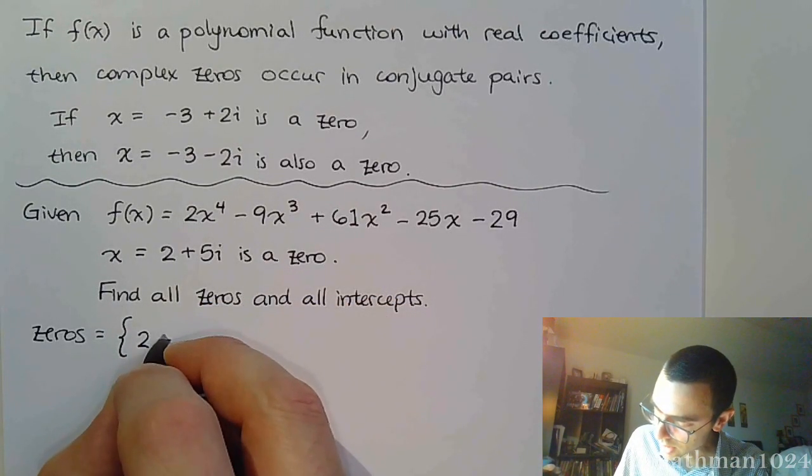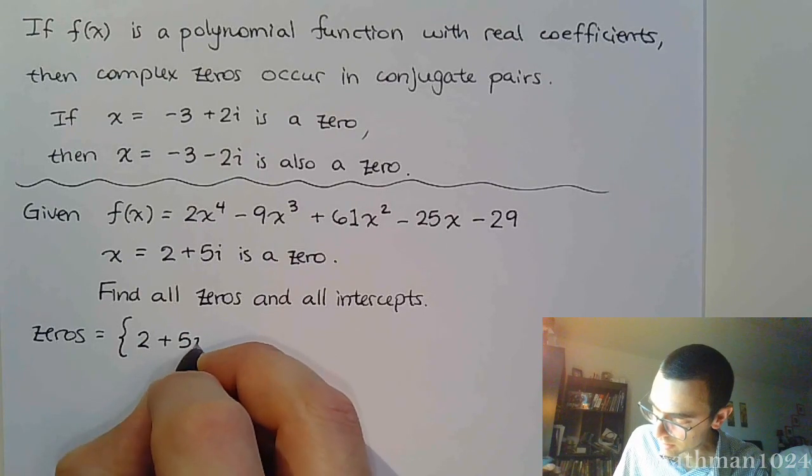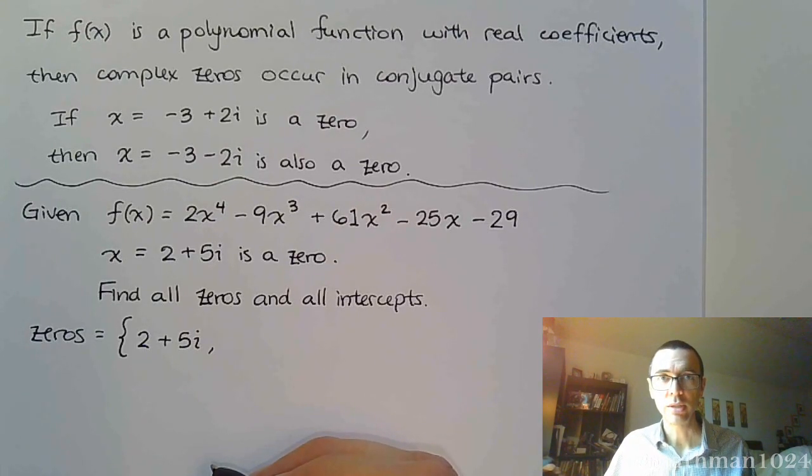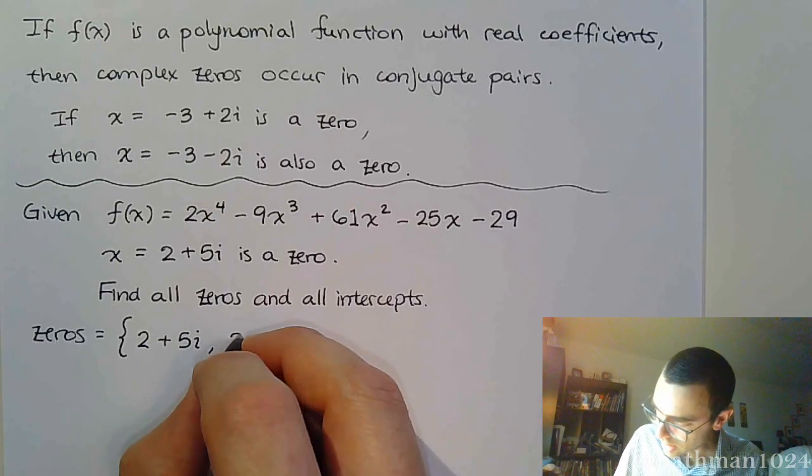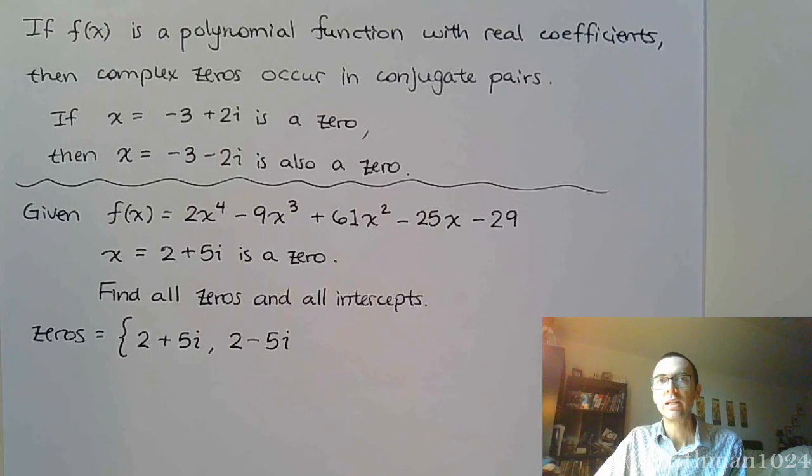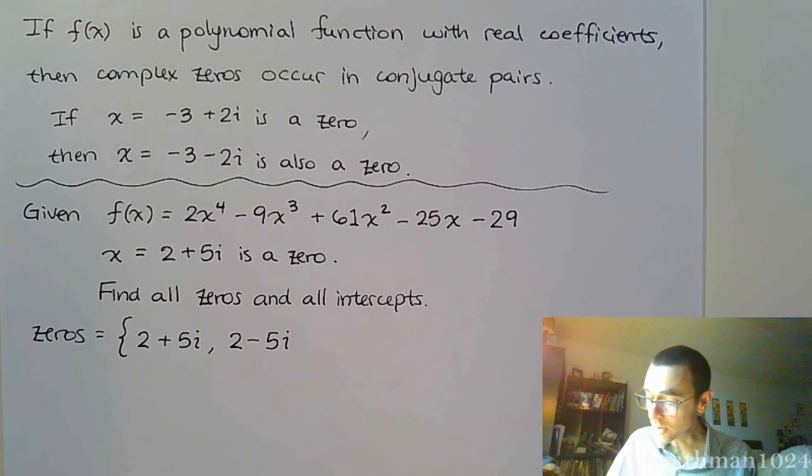I gave you that one of the zeros is 2 + 5i. Not only did I give you a zero, I gave you a complex zero, which means his conjugate, his conjugate is also going to be a zero. So, that means 2 - 5i is another zero. So, you've got 2 out of the 4. We should have to figure out what the other ones are.